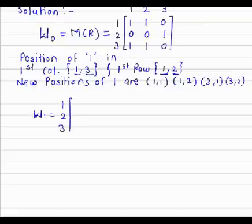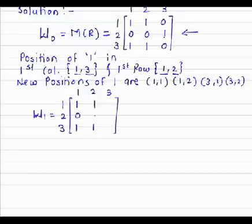Now first, we write the new positions. The new positions are (1,1), (1,2), (3,1), (3,2), and the remaining entries are taken from the previous matrix. That is 0, 0, 1, 0.